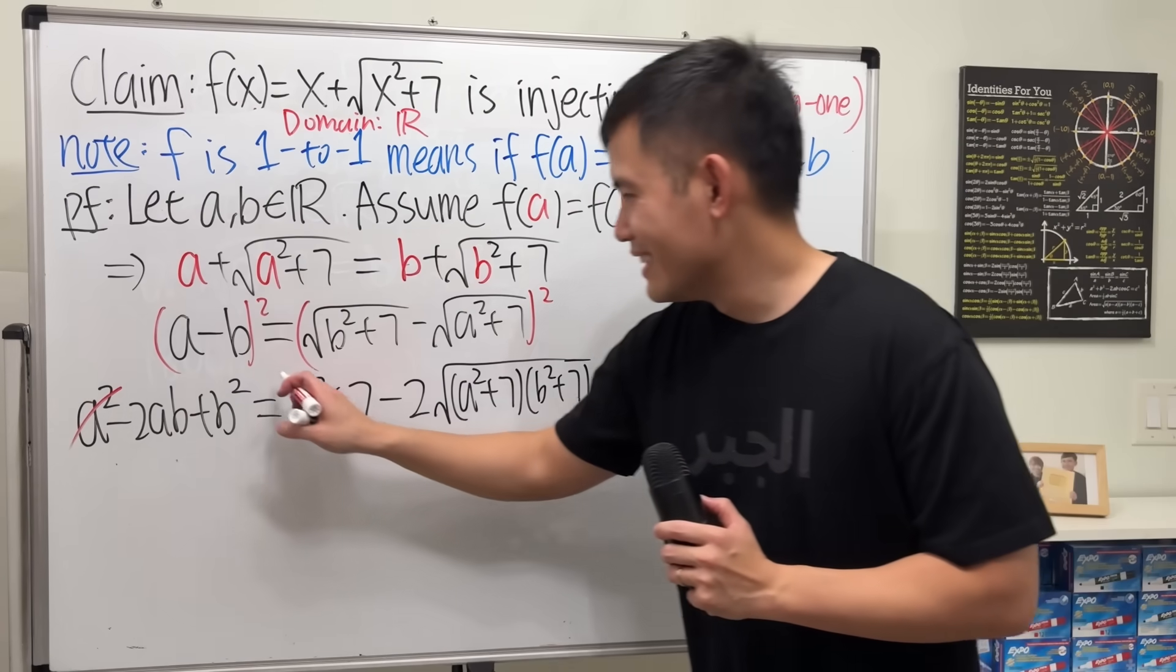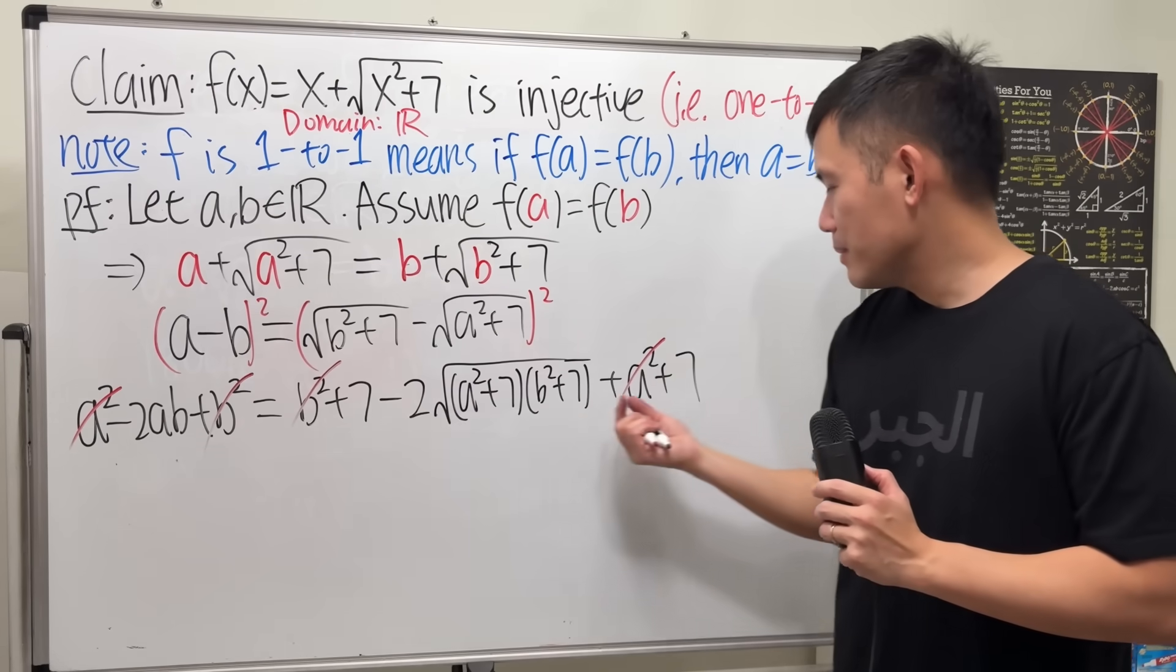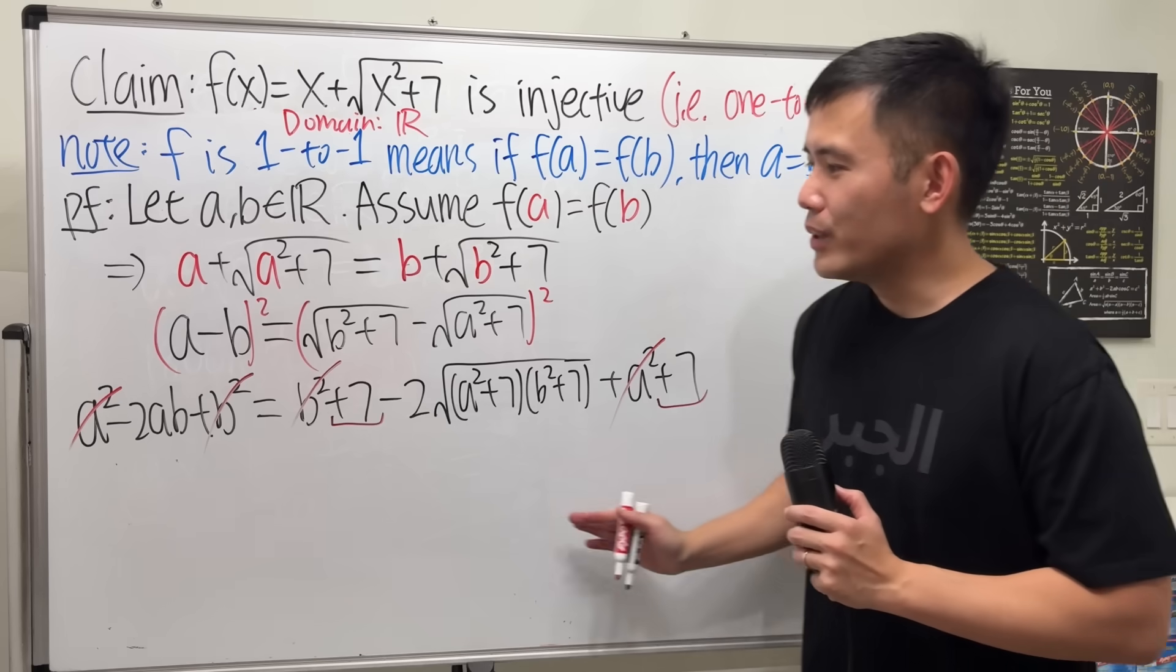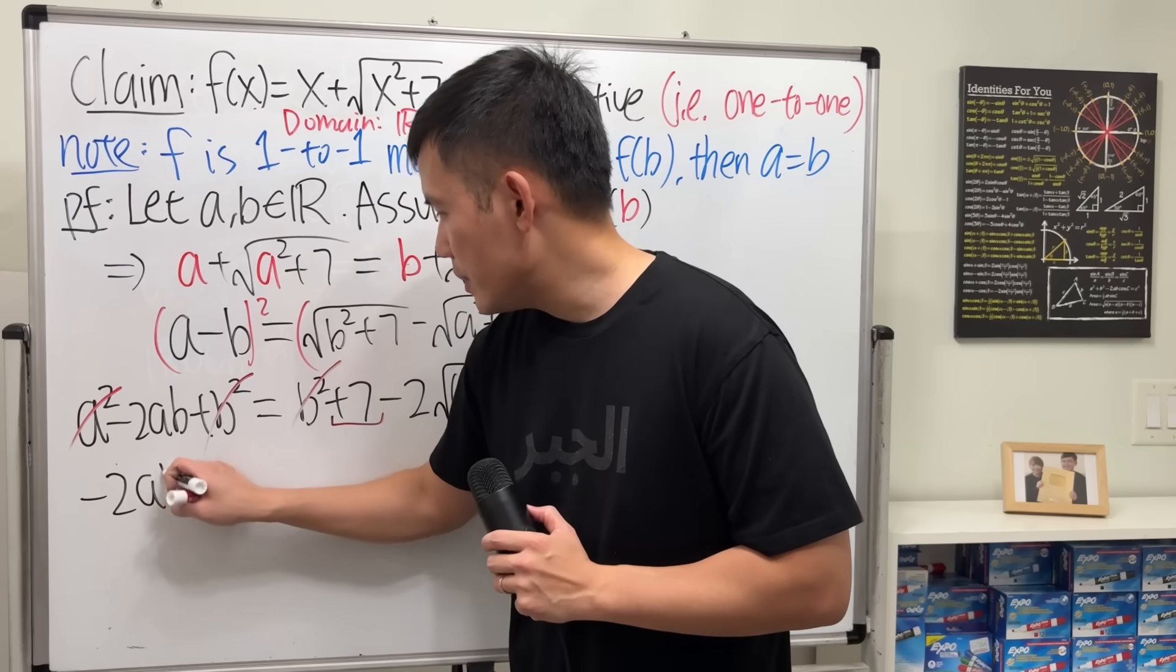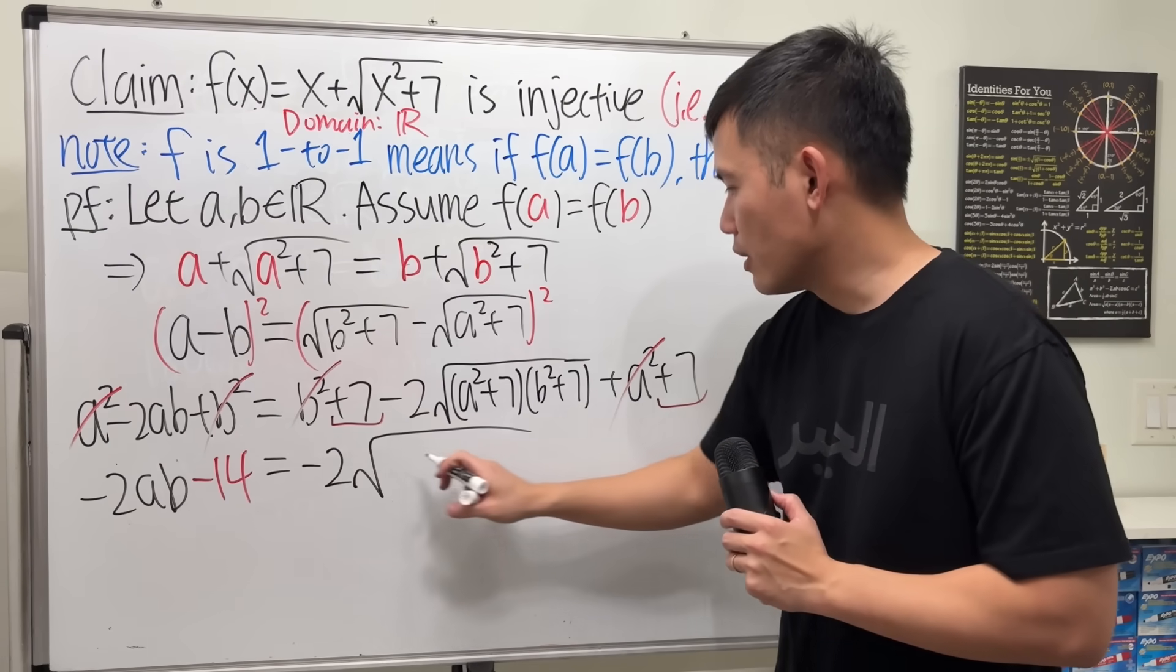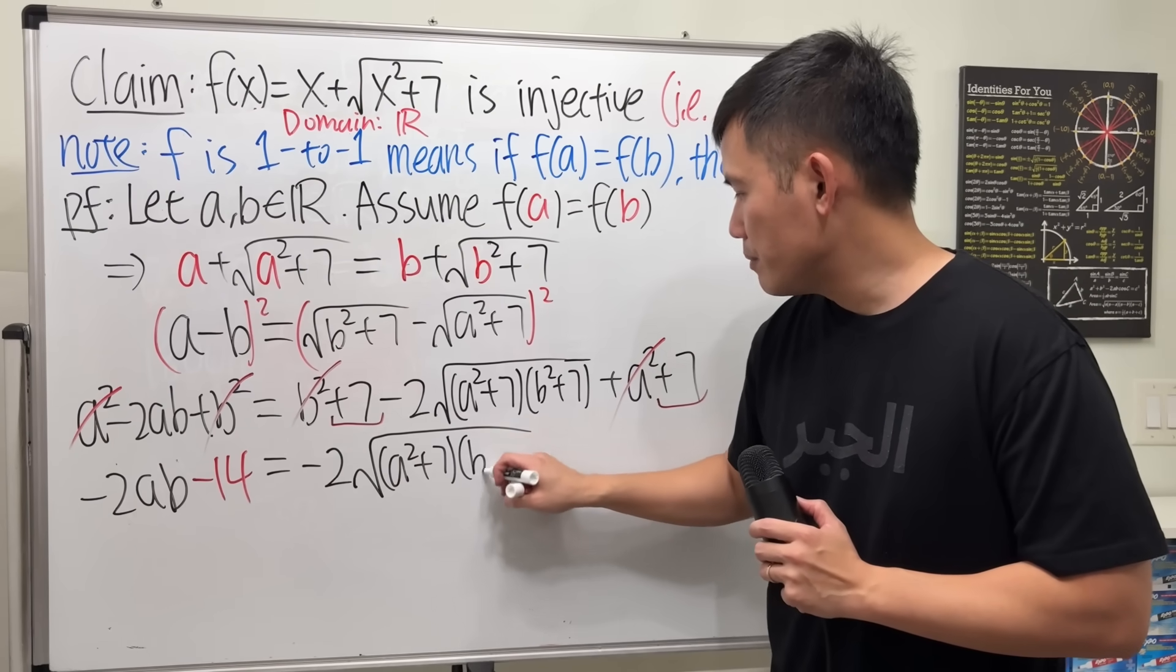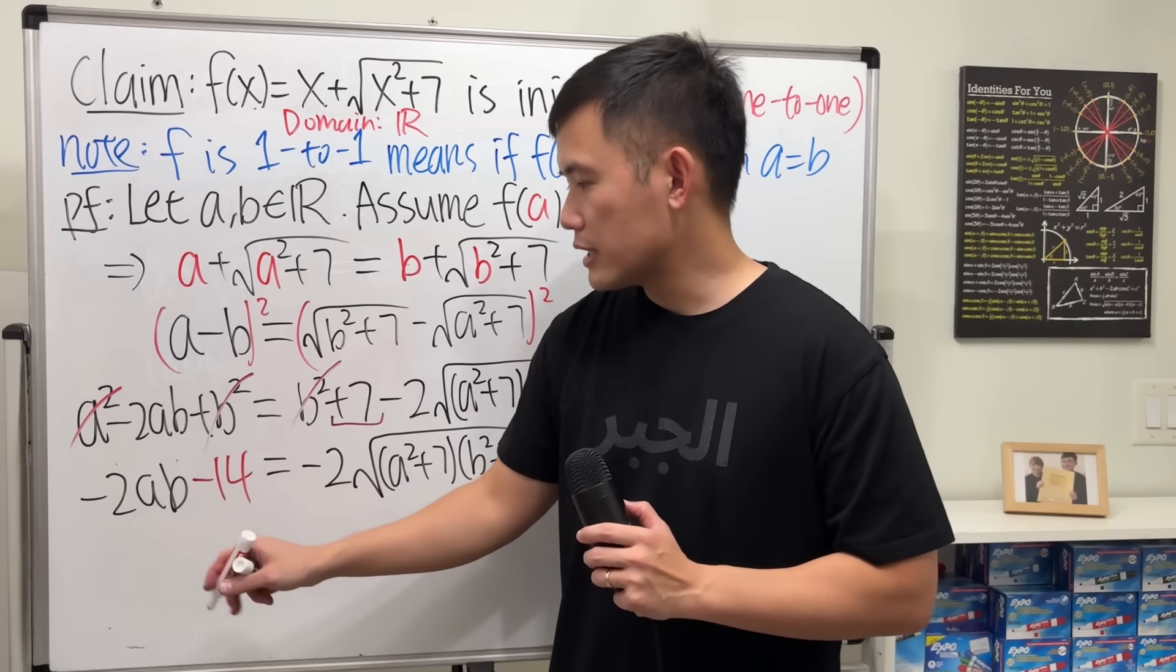Now, notice we have a squared on both sides, they cancel, and b squared on both sides, they also cancel. It's nice. 7 plus 7, which is 14. We cannot cancel that, but we can put it to the other side. So that is negative 2ab minus 14, and that's equal to negative 2 square root of a squared plus 7, times b squared plus 7.